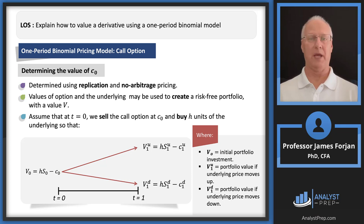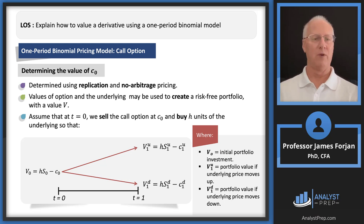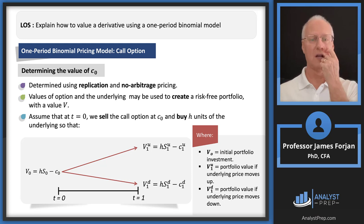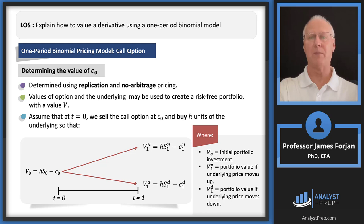How are we going to do this replication? The values of the option and the underlying asset — a share of stock — can be used to create a risk-free portfolio. In one of those earlier learning modules I described several types of replication where you could replicate the ownership of a share of stock, a call option, and a risk-free security. In particular, what we're going to do is write an option and then buy some shares of that underlying stock, creating what we'll call a hedged position.